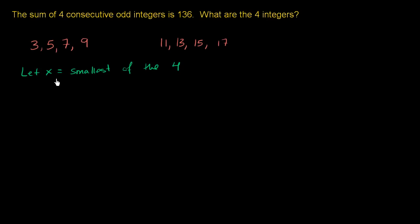If x is the smallest of the four consecutive odd integers, how can we express the other three in terms of x? Let's use these examples. If that is x, then how would we express this in terms of x? Well, this would be x plus 2.